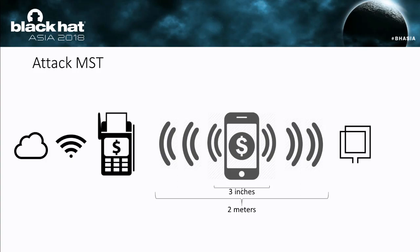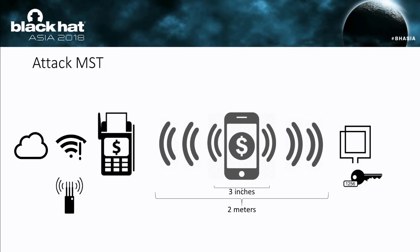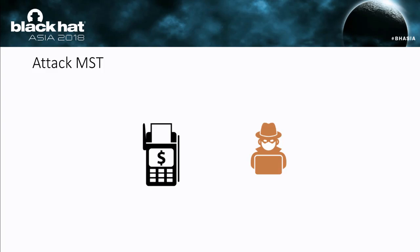This means an attacker standing nearby the counter can sniff the token. Also, many POS machines are mobile POS machines connected to the backend server via a wireless channel, which can be easily jammed using a commercial jammer. When the channel between the mobile POS and the backend server is interrupted, the sniffed token can be kept alive and transferred to the attacker's accomplice for spending. The accomplice only needs to use a simple magnetic strip card writer to write the sniffed token into a blank magnetic strip card, then swipe the card at another counter to purchase things.